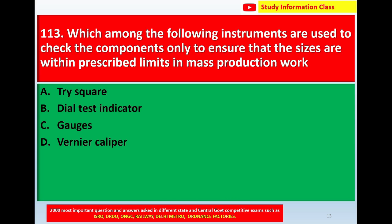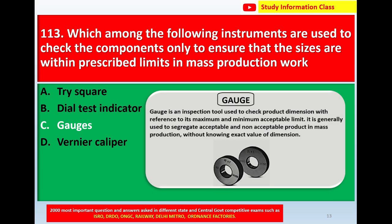Question number 113: which among the following instruments are used to check the components only to ensure that the sizes are within prescribed limits in mass production work? Option A: try square. Option B: dial test indicator. Option C: gauges. Option D: vernier caliper. The correct answer is Option C, gauges.